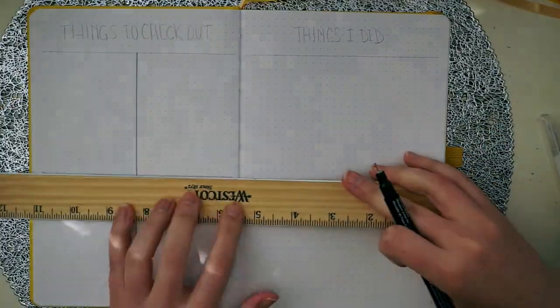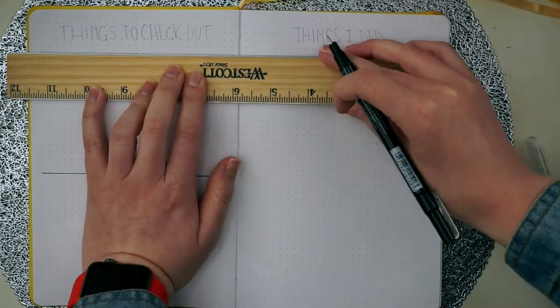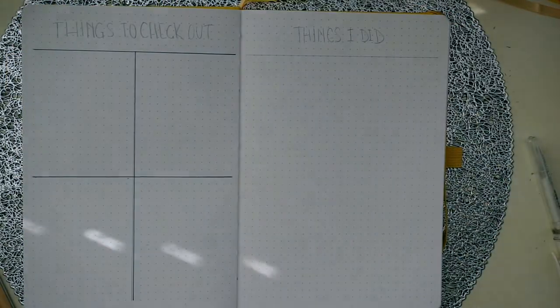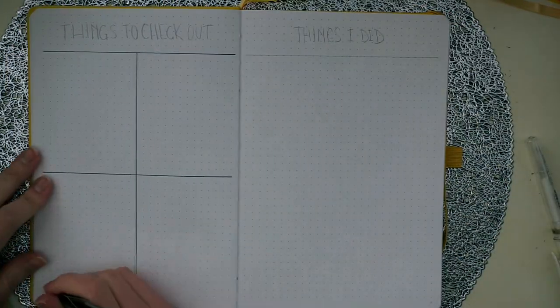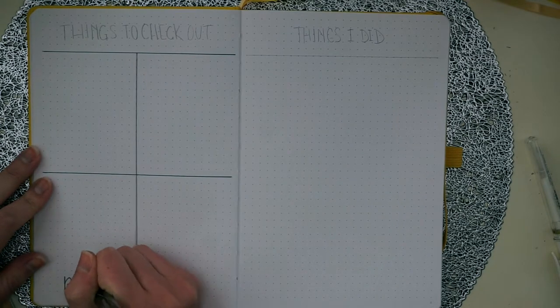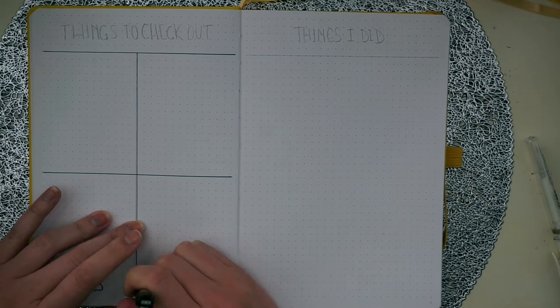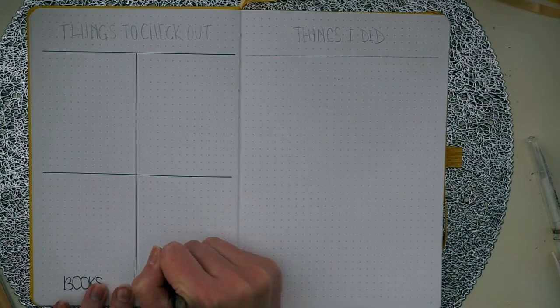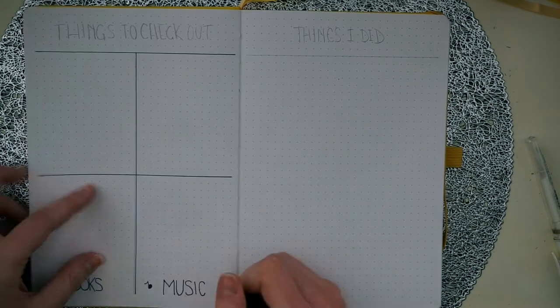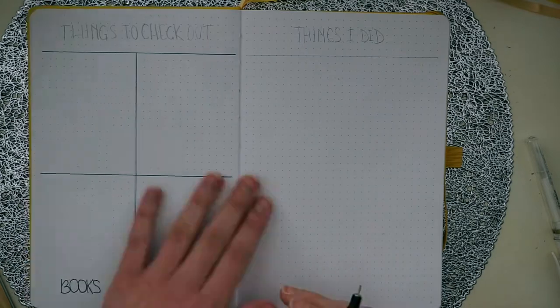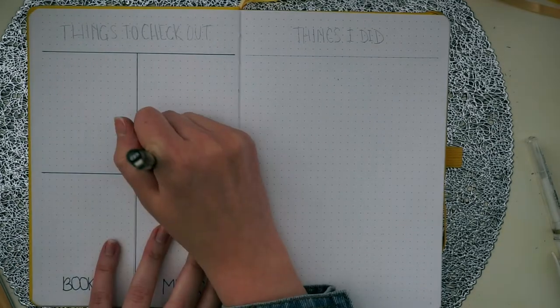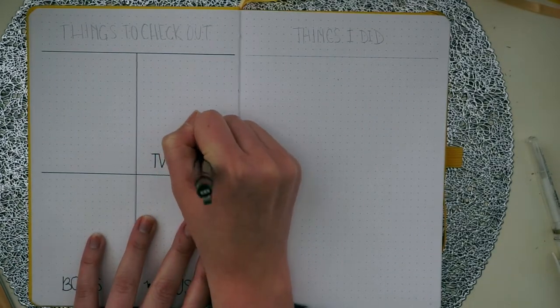The next spread that I put in my bullet journal is things to check out and I think this is a really great spread to do at the beginning of your bullet journal because you can create lists of the books, TV shows, movies, and music. Just list them out of what you want to listen to or watch or read and then you have a place to write it down.